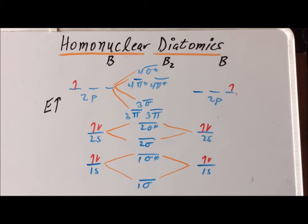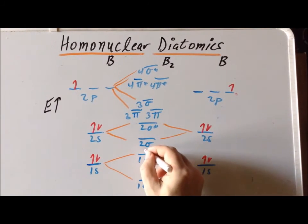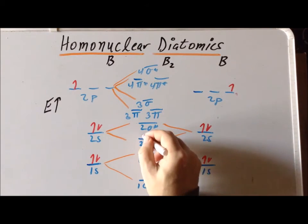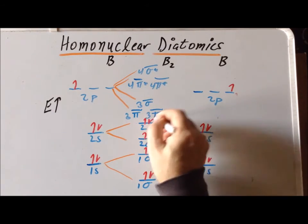Two electrons go here, two go here, two go here, and two go here, which gives us eight electrons so far. Applying the Aufbau principle, we are able to allocate the first eight electrons.